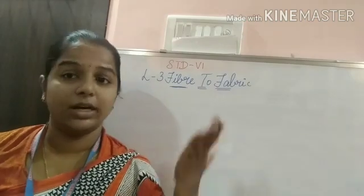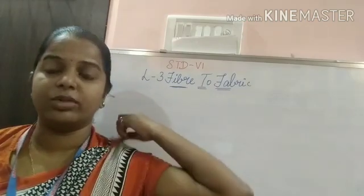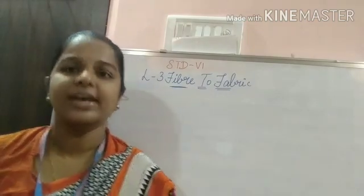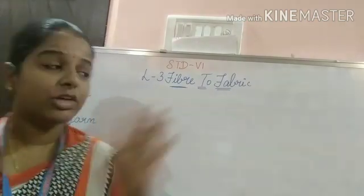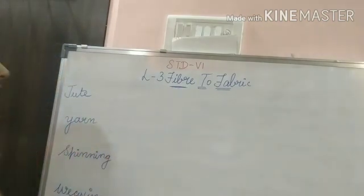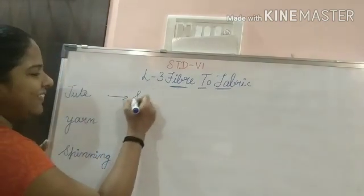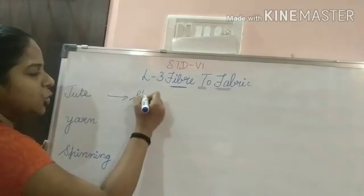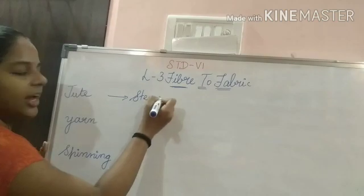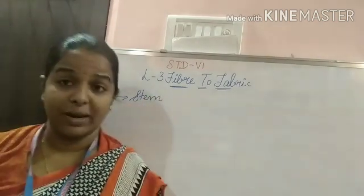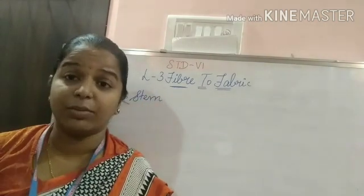Starting with the topic of jute: jute is obtained from a plant. You already know that jute and cotton are plant fibers. The part of the plant that gives jute is the stem — jute is obtained from the stem of the plant.